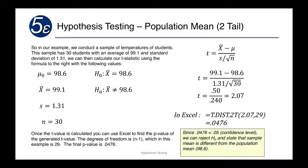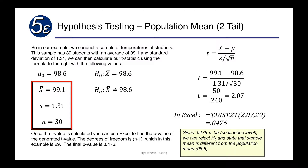This formula should look familiar because we used it when we developed our confidence interval a few modules ago. We have our mu-zero, which is going to be considered the population mean — that would be 98.6, which is what we're testing against. X-bar is our sample mean, which is 99.1. Our standard deviation from that sample was 1.31, and the number of observations is 30. All of this information is either given to you or calculated from the sample.